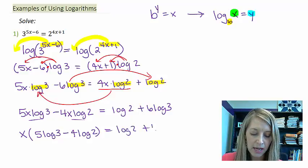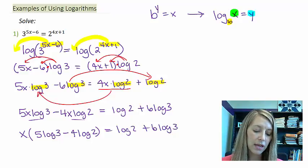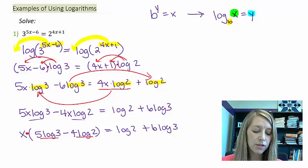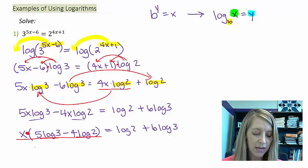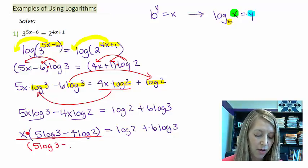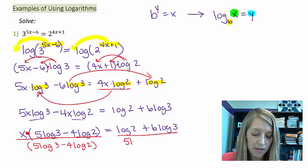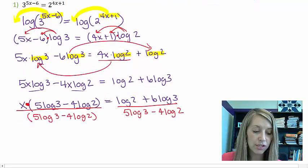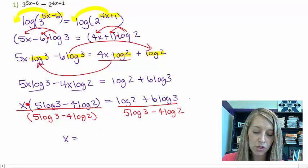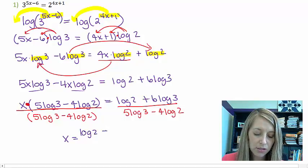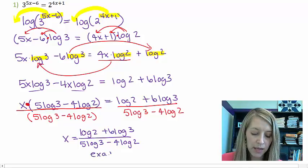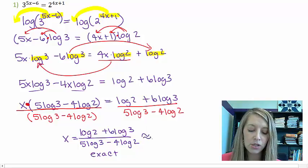So I have 5x log 3 minus 4x log 2 is equal to log of 2 plus 6 log of 3. Everything here on the right is just a numerical constant. Now, on the left, my goal is to try and isolate my x variable. Well, I have x in both of these places. So the way that I'm going to isolate my x is by factoring it out. And so this gives me x times 5 log of 3 minus 4 log of 2. If I want to get rid of it and isolate my x, then I divide by that whole unit. So I divide by 5 log 3 minus 4 log 2 on both sides of the equation. And so we have actually finished this problem. If we want the exact answer, then x is log 2 plus 6 log 3 over 5 log 3 minus 4 log 2.